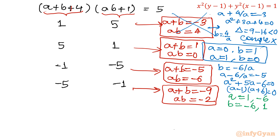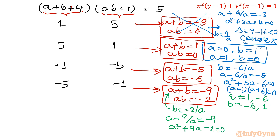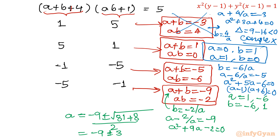Case 4: a + b = −9 and ab = −2. Write b = −2/a and substitute: a − 2/a = −9, giving a² + 9a − 2 = 0. The discriminant is 81 + 8 = 89, and √89 is irrational, so a = (−9 ± √89)/2, which is irrational. If a and b are irrational, then x and y will be irrational. This solution is rejected.